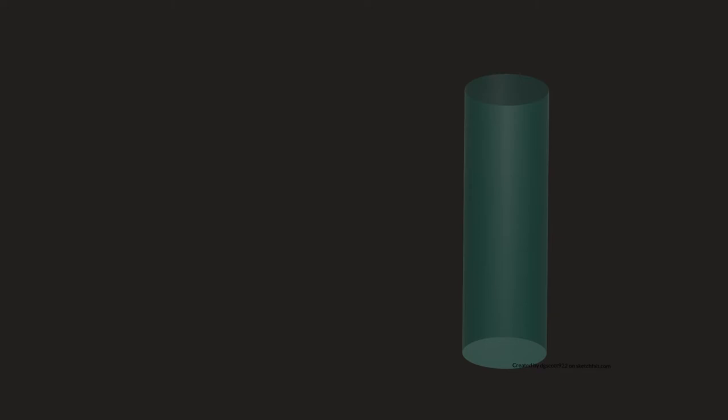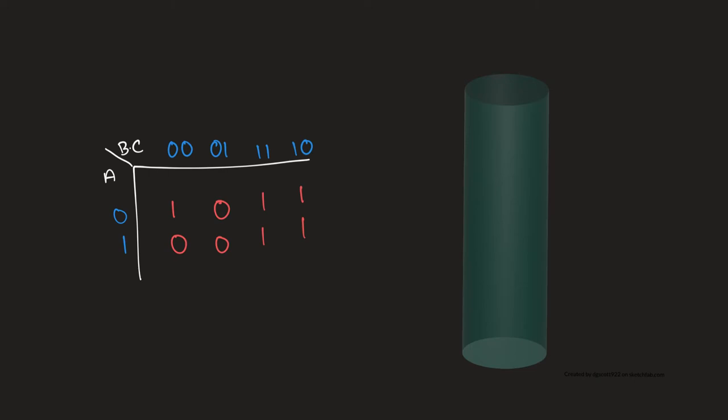There's something really important to note before we solve it: kmap tables wrap around. Imagine folding a tin foil around a cylinder — one end will touch the other end. Similarly, one end of the kmap table will touch the other end. With this in mind, let's actually solve it.